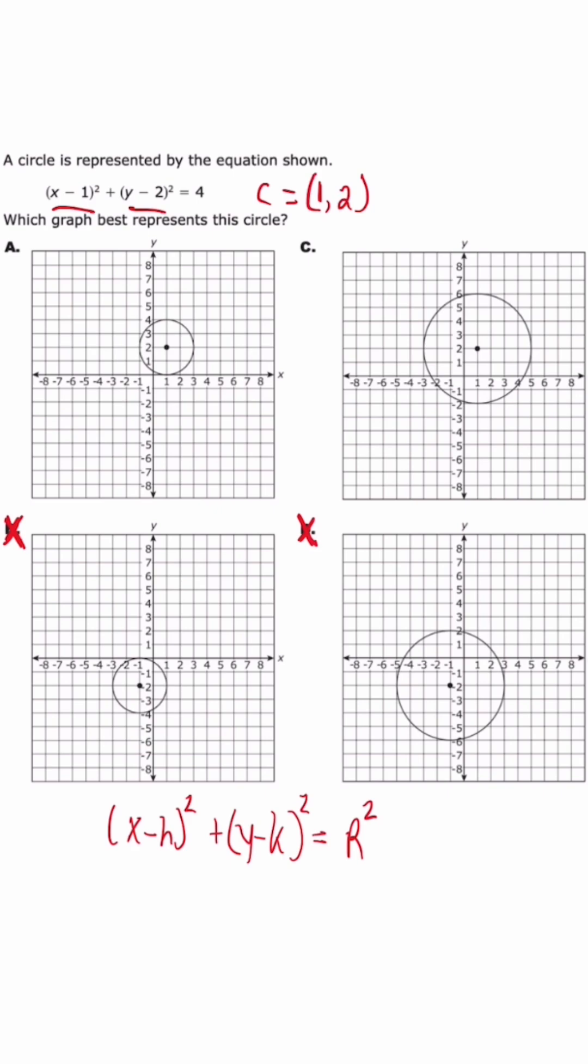So when we look at this even further, the only answer choice that has a radius of two from the center of the circle to the edge is going to be answer choice A. Please be mindful of the trick with the radius because that's how they're trying to get you at times with these type of problems.